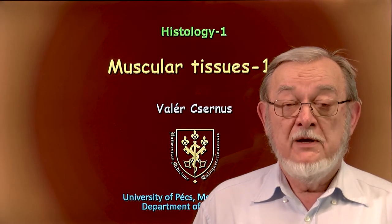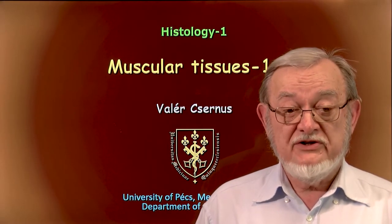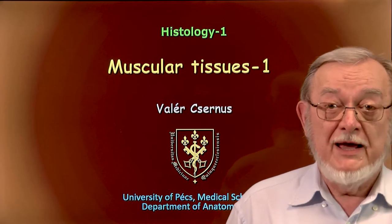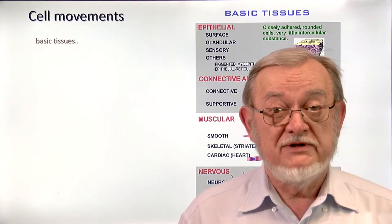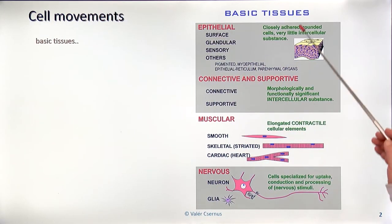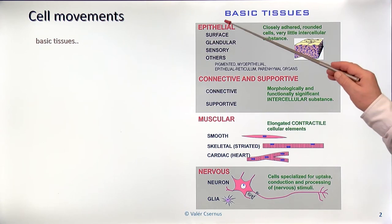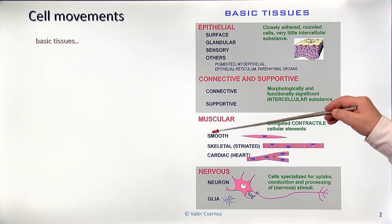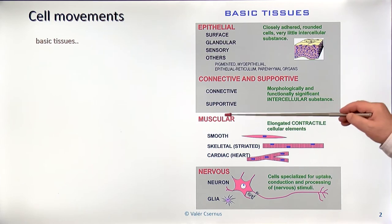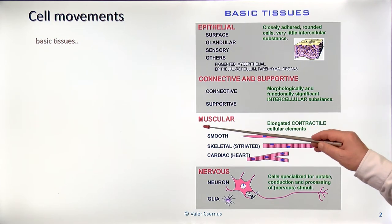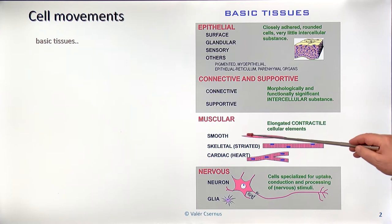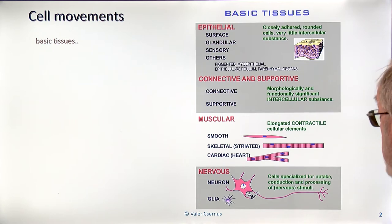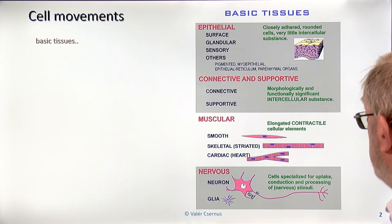Dear students, with this lecture I start describing a new type of basic tissues: the muscular tissues. As you know, the large number of human tissues are divided into four main groups, and these are the basic tissues. Among them, the muscular tissues are characterized by elongated structures which can contract very forcefully and quickly in an energy-demanding way.